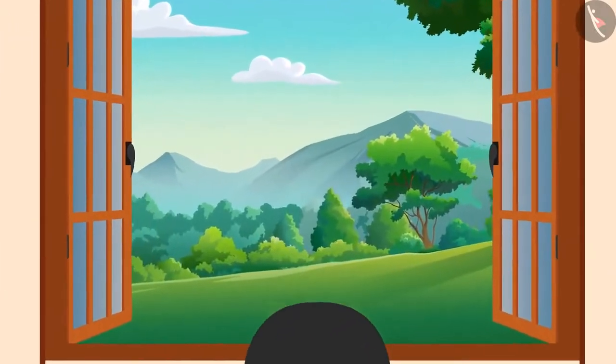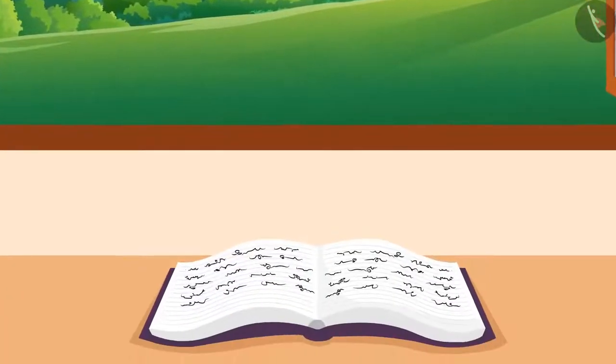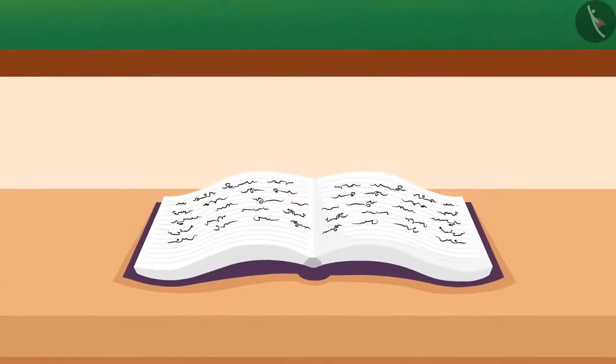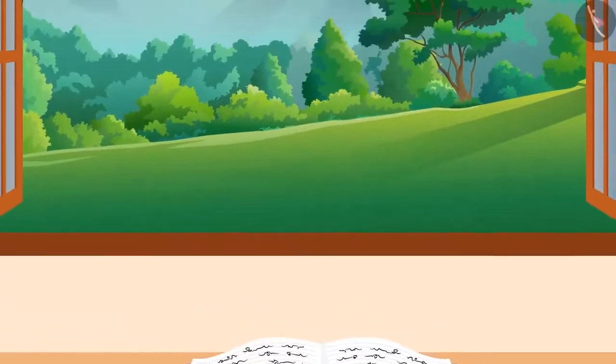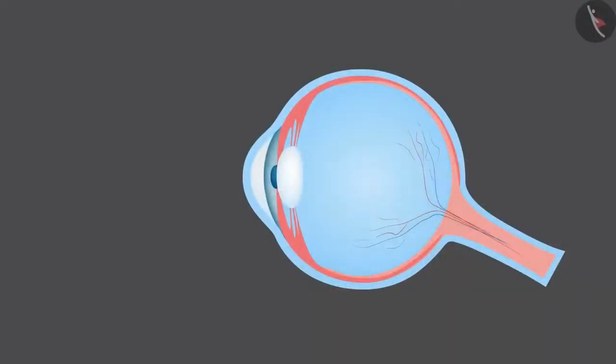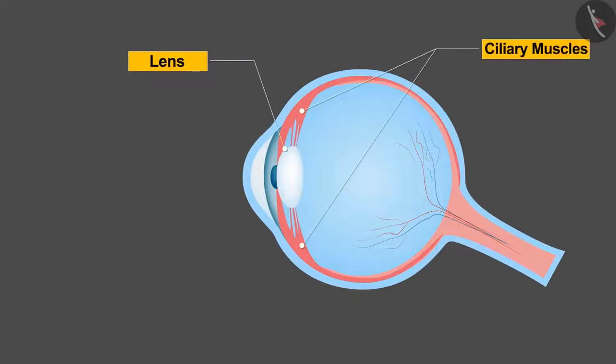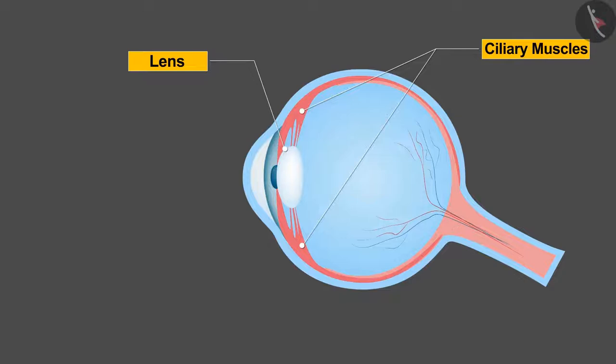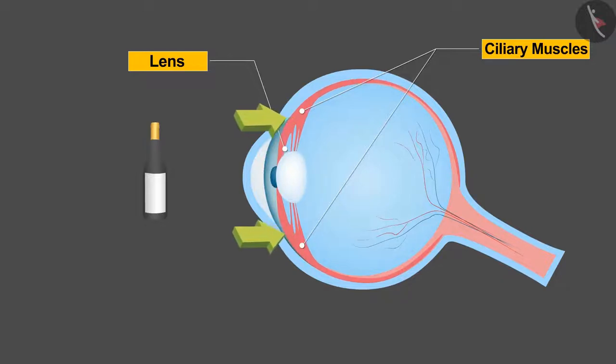But is it as easy as it looks? No. As we have already known, the lens in our eye changes its size of focal length with the help of ciliary muscles, due to which we are able to see these different objects in a time of a second.